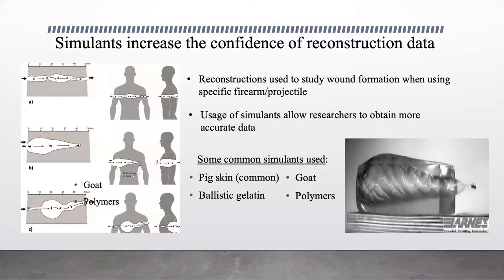Skin simulants can be used to obtain more accurate data, and the most common skin simulant is pig skin, as it is structurally similar to human skin.